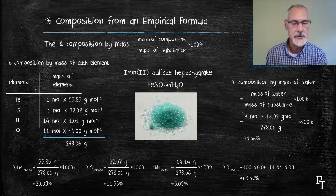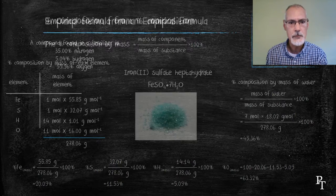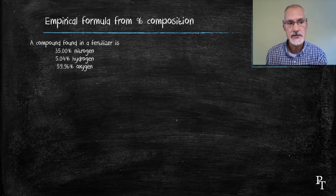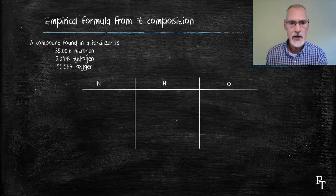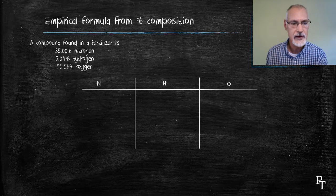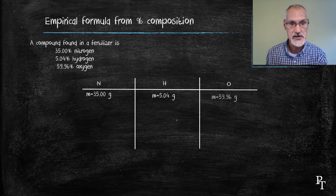Let's look at going the other way. Here I'm given a percentage composition and I'd like to, from that, determine the empirical formula. To do so, I begin considering each element, much like in the other case. I assume I have 100 grams of the substance and therefore I know the mass of each substance.